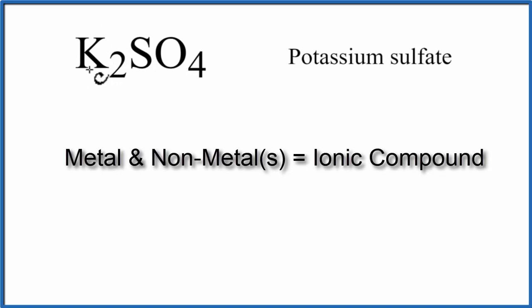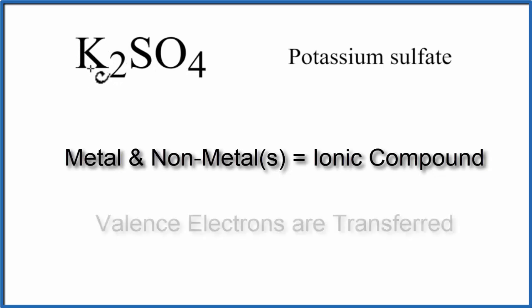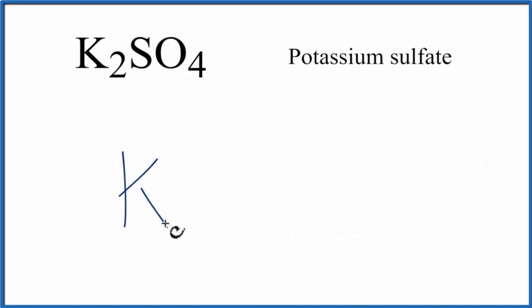And the metals, they transfer their electrons, their valence electrons, to the nonmetals. So we write K here, and then over here, and we'll put the sulfate ion right between them.